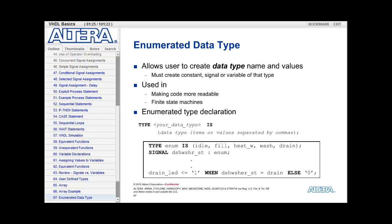So looking at the code snippet at the bottom, we have a brand new type called enum, is, and the values of it are idle, fill, heat w, wash, and drain. So I have a brand new data type called enum that has five different values. Then I need to declare a signal that is of type enum. So this signal is called dishwasher underscore state and it is of type enum. Then down in the code, I can actually assign the values, the five values, to my signal. So down here I have drain underscore LED gets the value of one when dishwasher state equals drain, else drain LED is zero. So again, I've defined a brand new data type and the synthesis tools, simulation tools understand, and it again makes the code that much more readable.